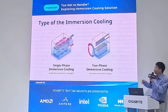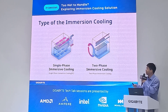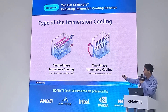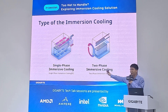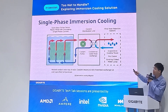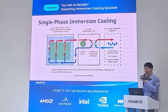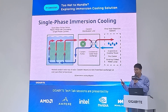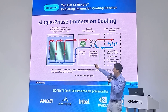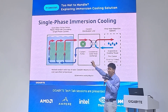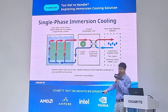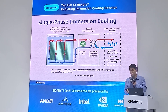Looking at the market, there are currently two types of immersion cooling: one-phase and two-phase. Starting with one-phase immersion cooling — the principle involves immersing the whole server into a tank. A cooling distribution unit connects between the tank and the cooling tower, performing heat exchange and bringing heat back to the cooling tower for dissipation.